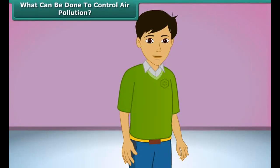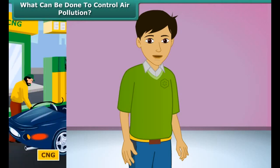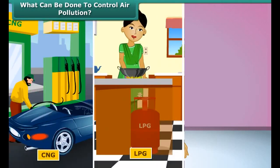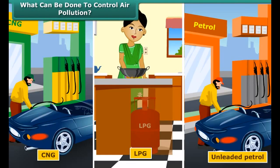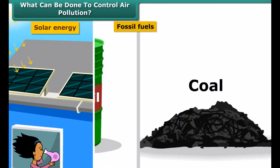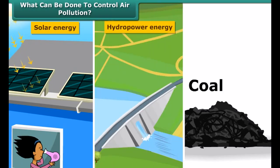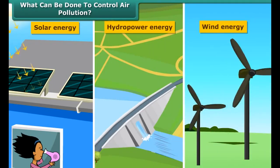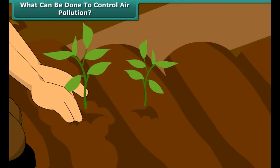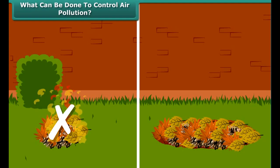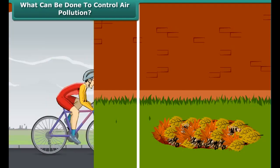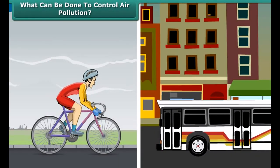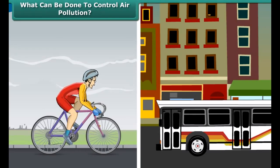Can you tell what we should do to reduce air pollution? There are many things we can do. We can use clean fuels such as CNG, LPG, and unleaded petrol. Instead of fossil fuels, we can use solar energy, hydropower, and wind energy. We can also plant new trees. Rather than burning dry leaves, we can put them in a compost pit. We can walk more, switch over to bicycles for short distances, and use public transport.